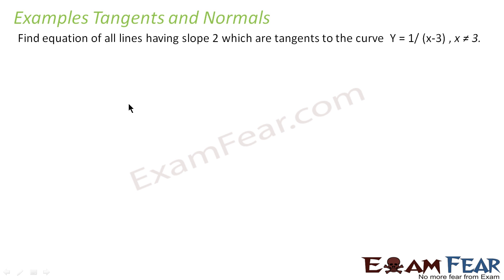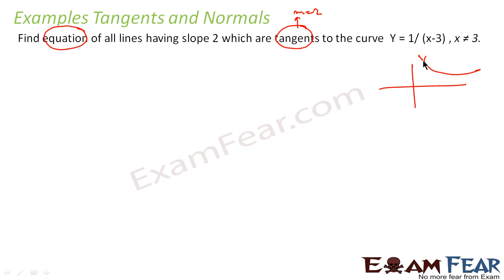Let's take one more example. Here it is a different question altogether. Instead of finding the slope of tangent or slope of normal, I have to find the equation of all lines having slope 2 which are tangent to the curve. So here the slope of tangent is 2 and the equation of the curve is also given. To find the equation of this tangent I know the formula y - y₀ = m(x - x₀), and I know m = 2.